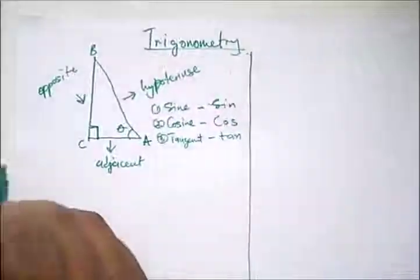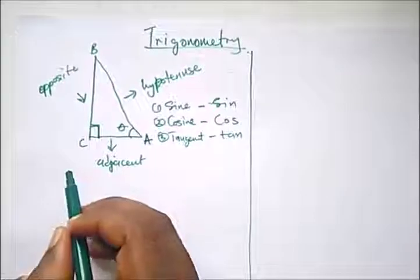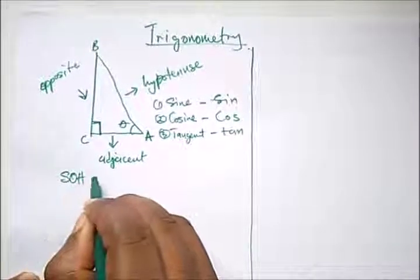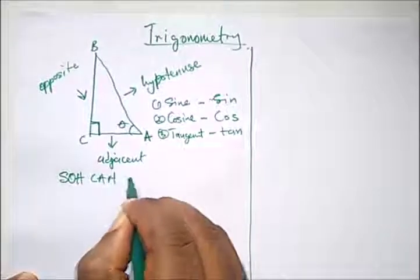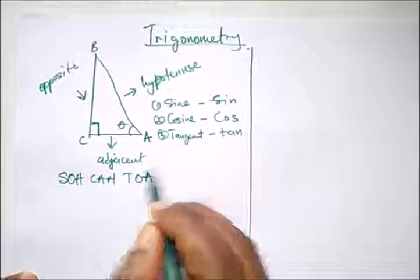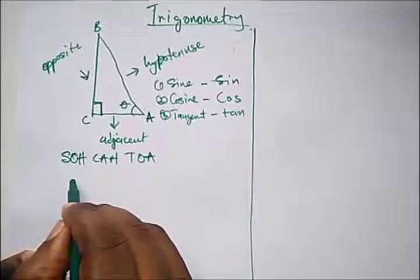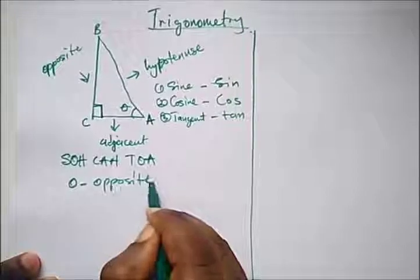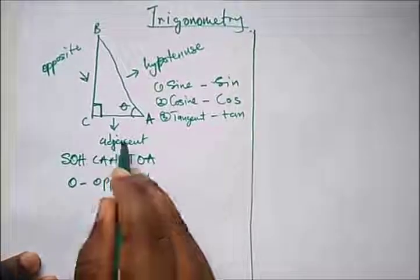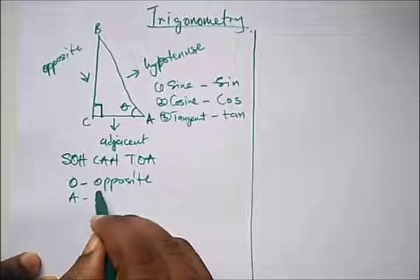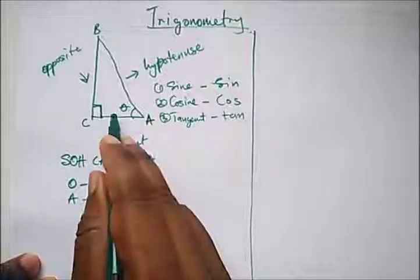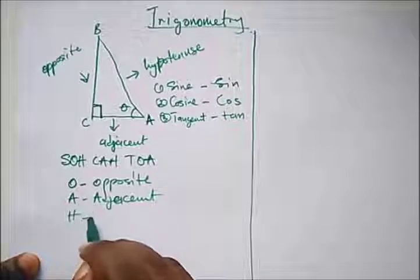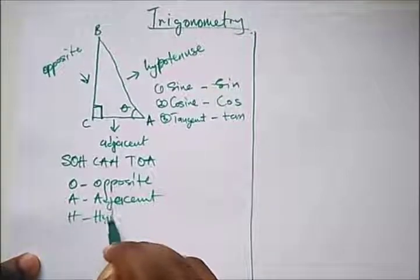To solve trigonometric ratios, we apply SOH-CAH-TOA, where O means the opposite, A means the adjacent, and H means the hypotenuse.